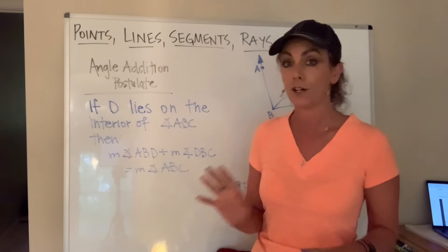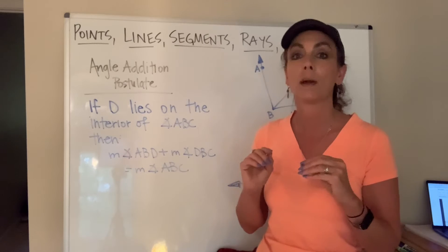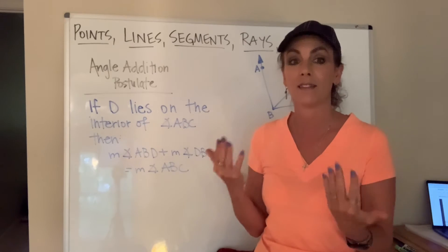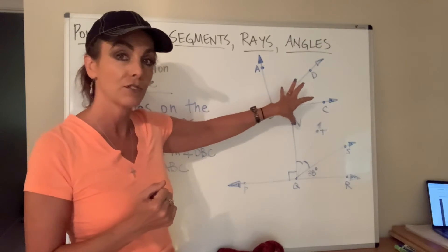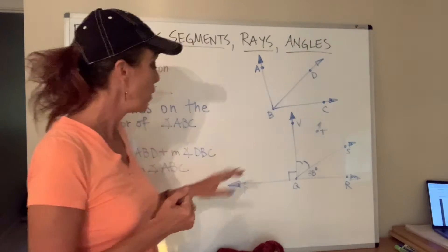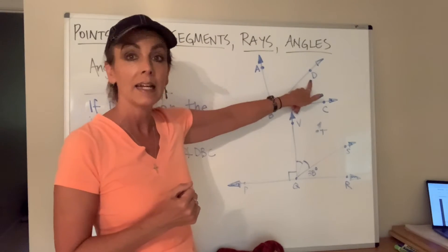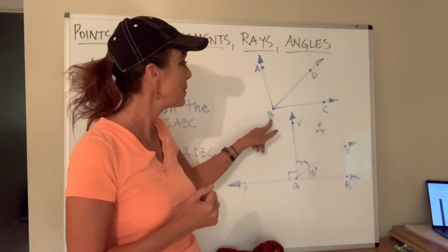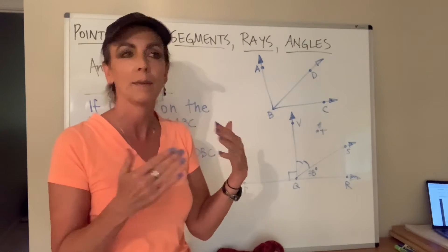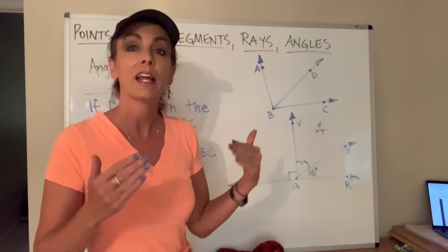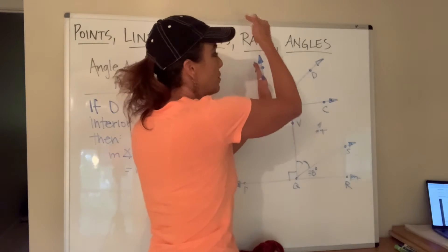Now, that's a lot of letters, so let's actually apply them to a drawing so we can wrap our heads around this idea. Here is a diagram. This top diagram illustrates what's going on with all these letters. This is saying that D is on the interior of angle ABC. Remember, any point is on the interior if I could draw a segment from side to side of the angle and go through D.